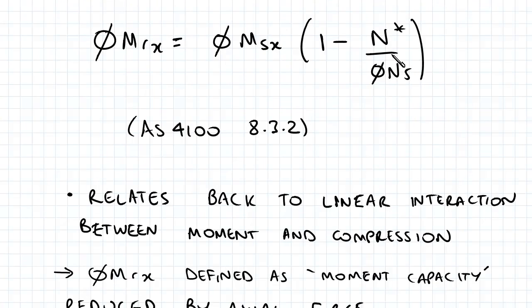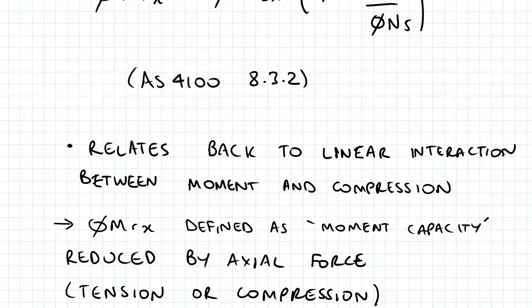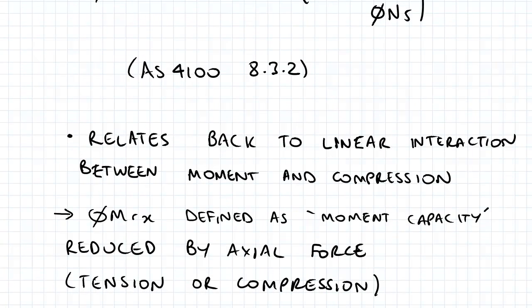which I showed in that graph in the previous video and which was a linear sort of graph and PHYMRX is defined as moment capacity reduced by axial force and that's the definition as per AS4100.